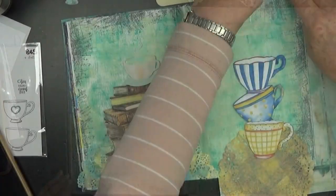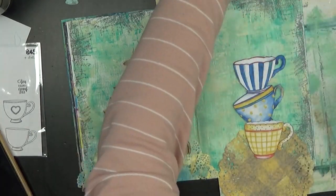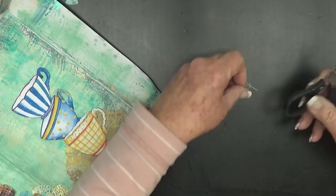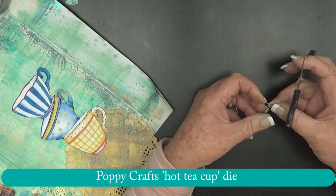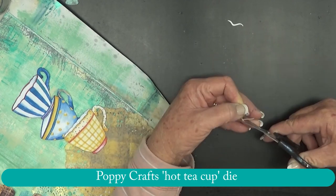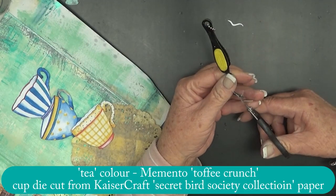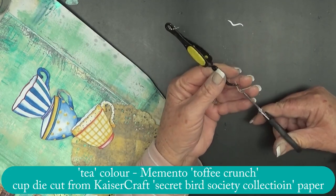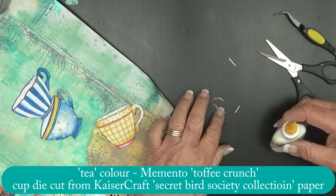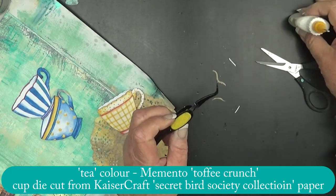Anyway all the products used will be in a blog post linked below the video here. So I just rubbed some of the Toffee Crunch Memento ink onto a piece of cardstock lightweight and I die cut the hot tea cup die again. And now trying to attach the steam tendrils. It's a bit fiddly.